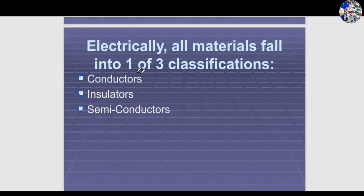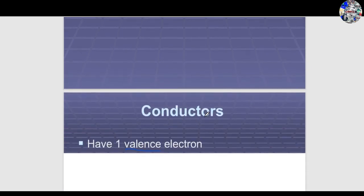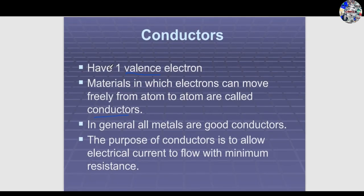Electrically, all materials fall into three basic classifications: conductors, insulators, and semiconductors. Conductors have one valence electron — materials in which electrons can move freely from atom to atom. Valence electrons are the electrons present in the outermost shell of any atom. In general, all metals are good conductors, as they allow the flow of electrons to minimize electrical resistance.